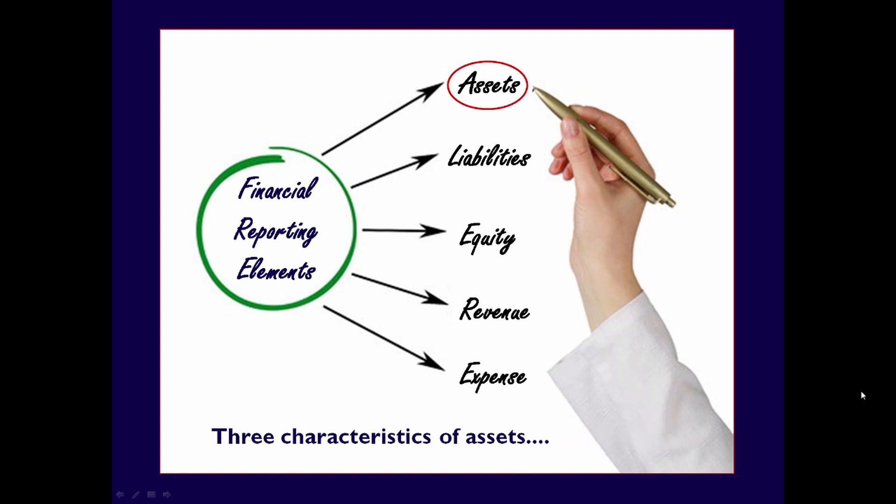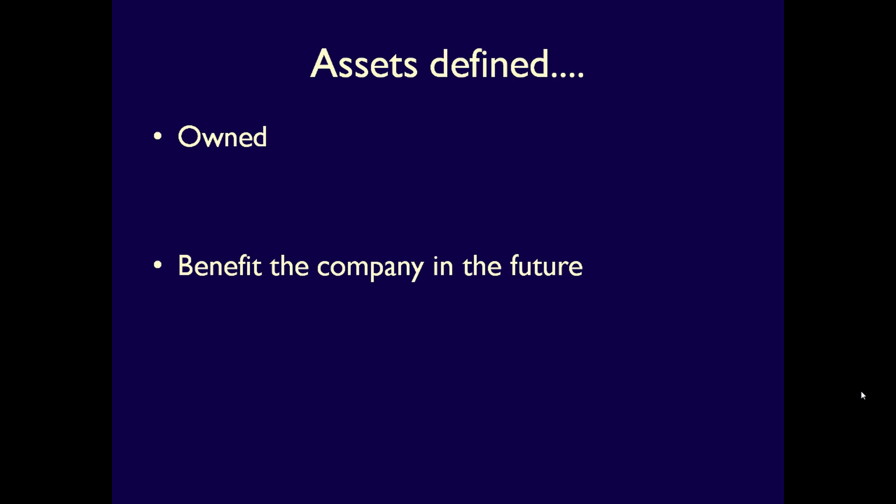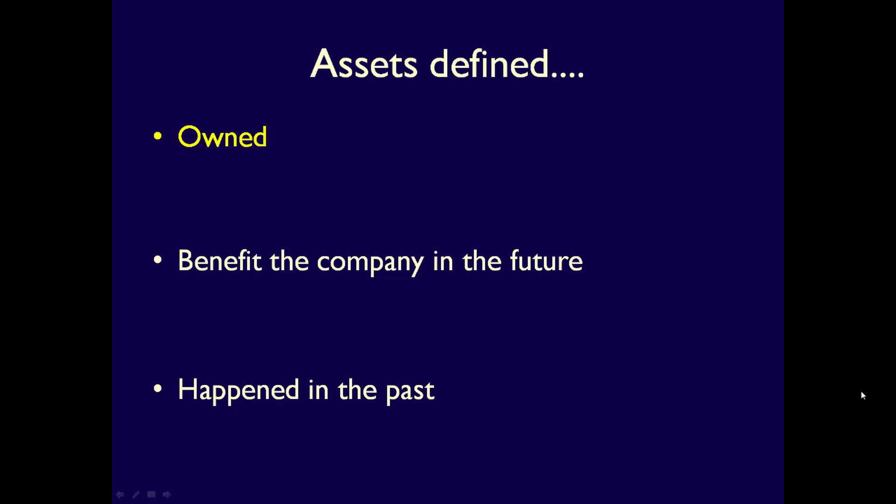Let's start with assets. Assets have three characteristics: assets are owned, they provide future economic benefit, and they are due to past events. Let's go through each of these characteristics. First, assets are owned. The concept of owned is pretty straightforward — for example, my cell phone is an asset because I own it.